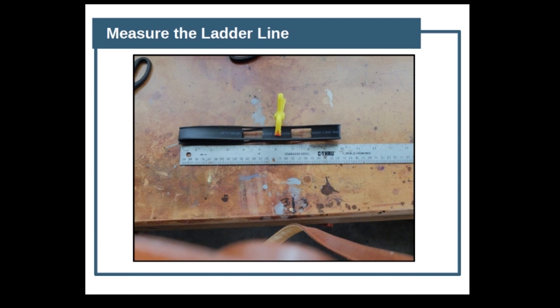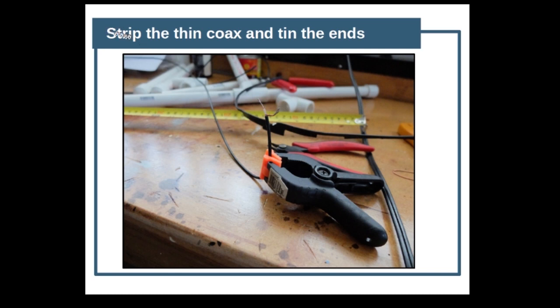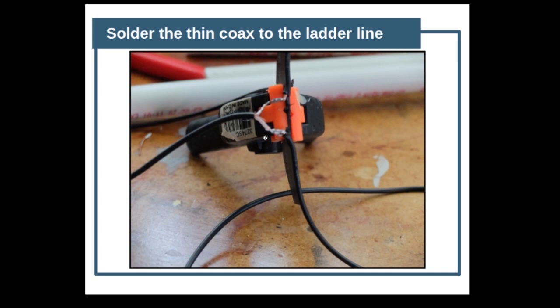The first thing we need to do is measure out the ladder line. I said 10 inches but we need 9.8 inches, and we're going to take that out of the middle. You'll notice I've notched the ladder line and stripped it off so the ends are bare. I've left a little bit of the ladder line there to keep the two ends separated. We now have two pieces of wire for a dipole on each side, and the center point is where we feed into it. Next we strip the thin coax and tin the ends with solder.